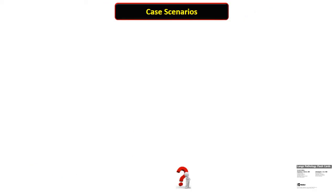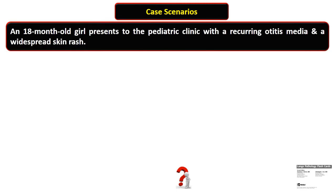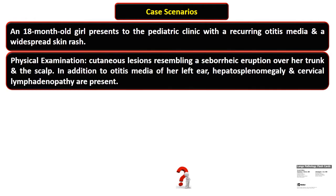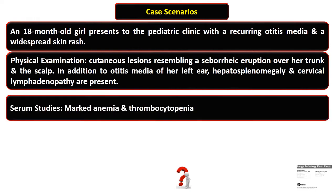We will look for the solution of this clinical scenario in which an 18-month-old girl presents to the pediatric clinic with recurring otitis media and a widespread skin rash. Physical examination shows cutaneous lesions resembling a seborrheic eruption over her trunk and scalp. In addition to otitis media of her left ear, hepatosplenomegaly and cervical lymphadenopathy are also present.